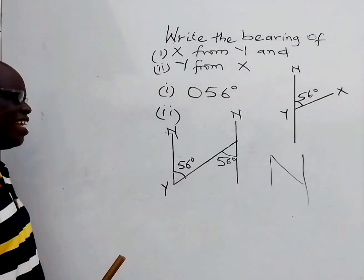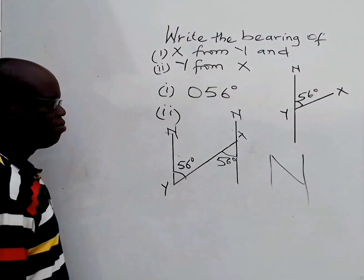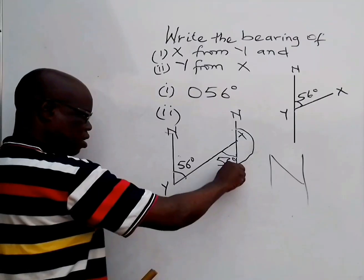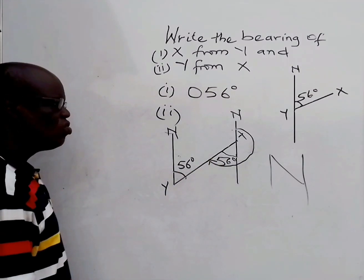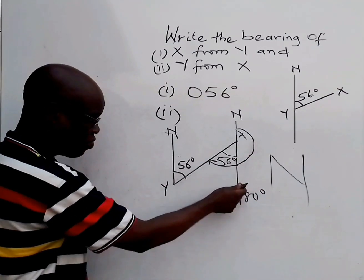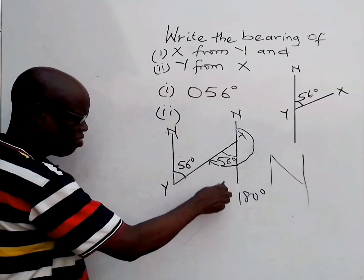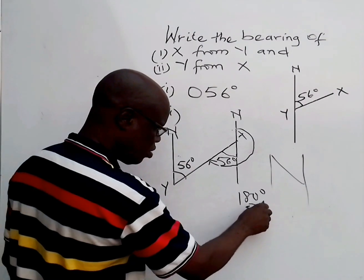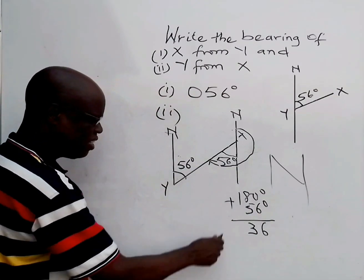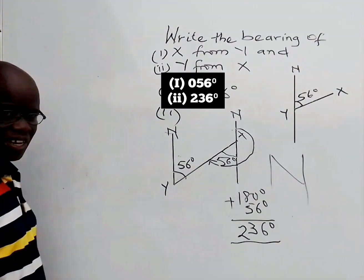Since you are looking for the bearing of Y from X, the bearing will be from here to this place. You know that from here to this place is 180 degrees — angle on a straight line. From here to this place is an extra 56 degrees. So you add them together: 180 plus 56 equals 236 degrees. So for the second one, the bearing of Y from X is 236 degrees.